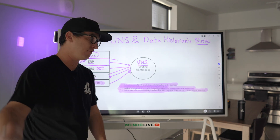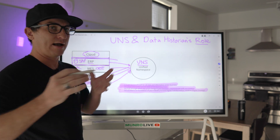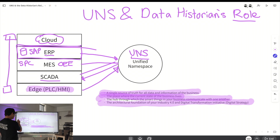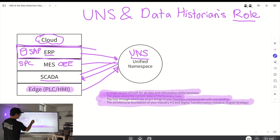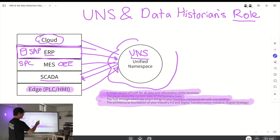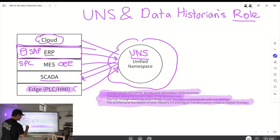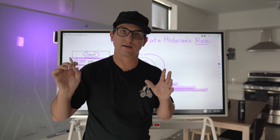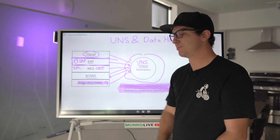We're going to focus on how this all plays into the historian's role. Same thing with cloud: rather than a digital threading approach where you're creating objects on the Edge and threading them all the way up to the cloud, missing all the context — instead, you subscribe to the Unified Namespace and publish back in. The Unified Namespace might live in the cloud or on the Edge. It's omniscient and omnipresent.